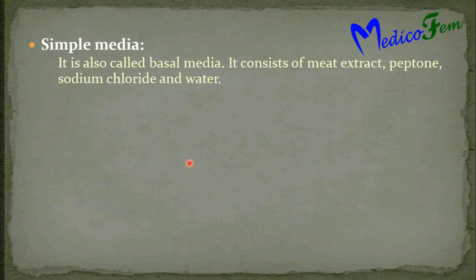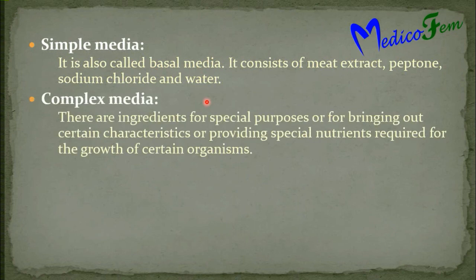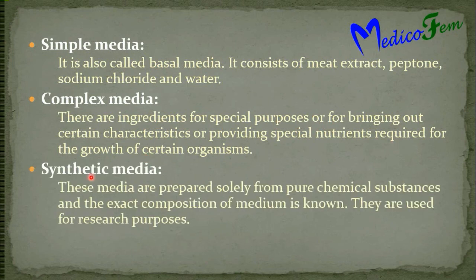Simple media, also called basal media, contains meat extract, peptone, sodium chloride, and water. Complex media contains ingredients of special purpose for bringing out certain characteristics or providing special nutritional requirements for the growth of certain organisms. Synthetic media are prepared from pure chemical substances and the exact composition of the medium is known. They are used for research purposes only.